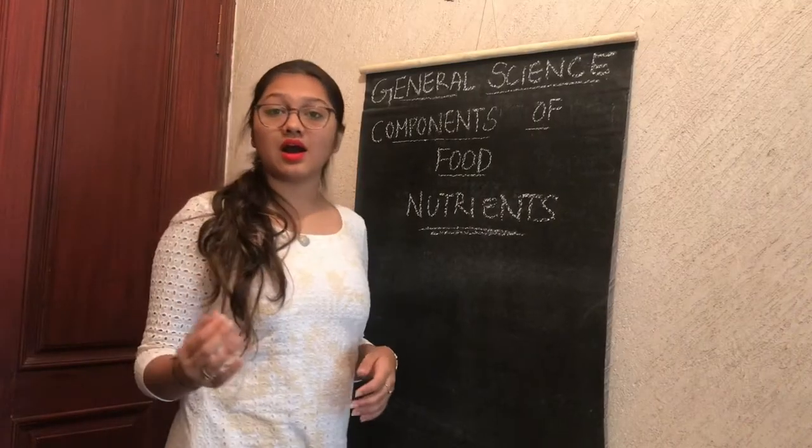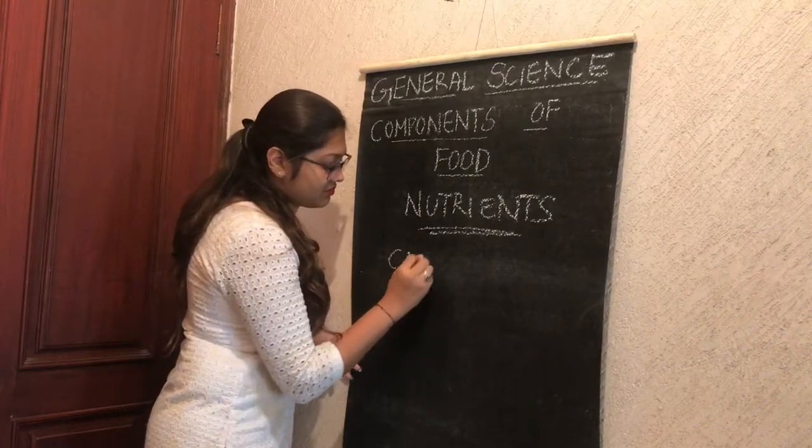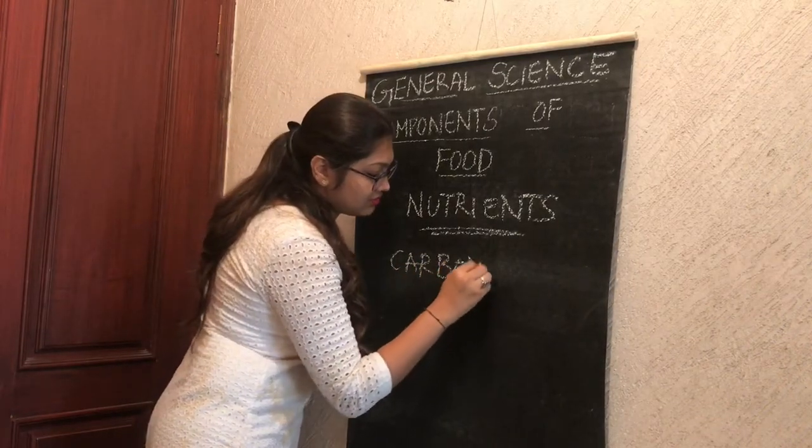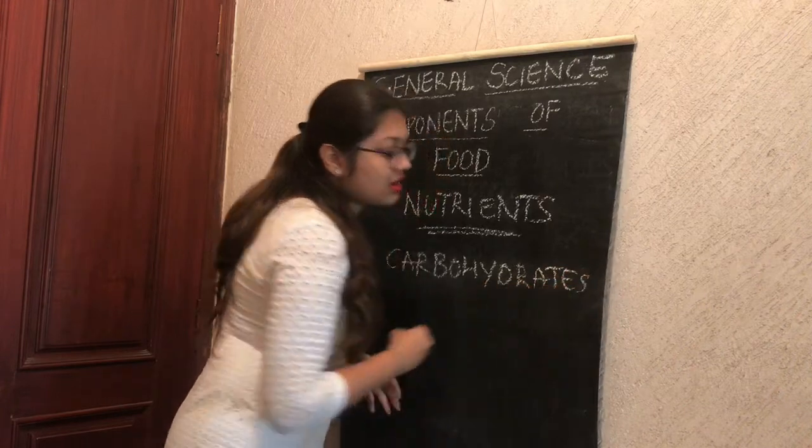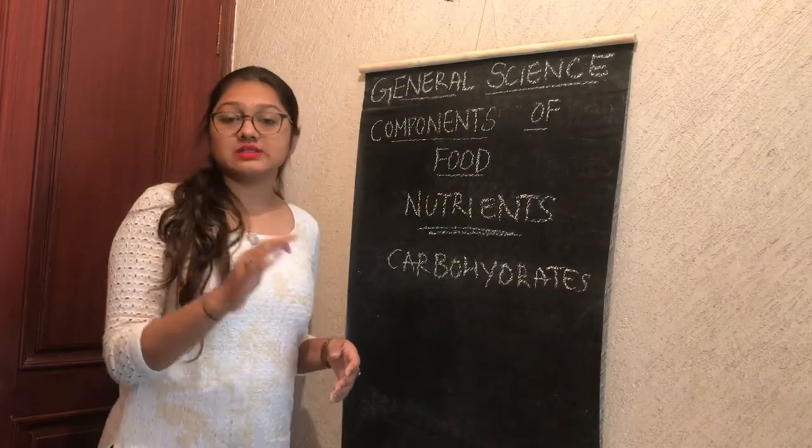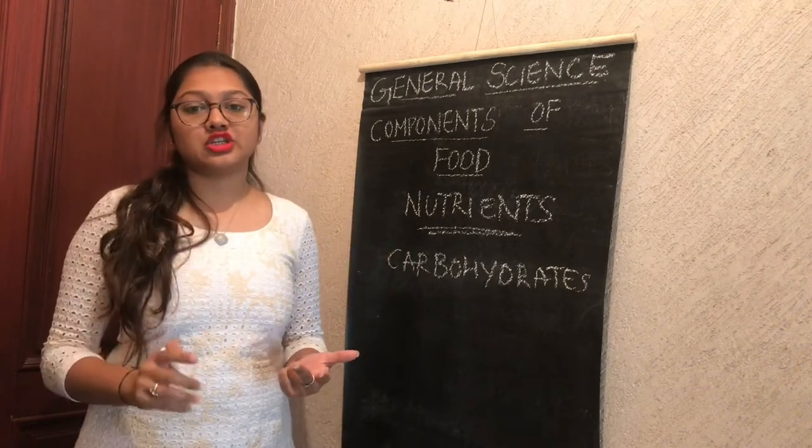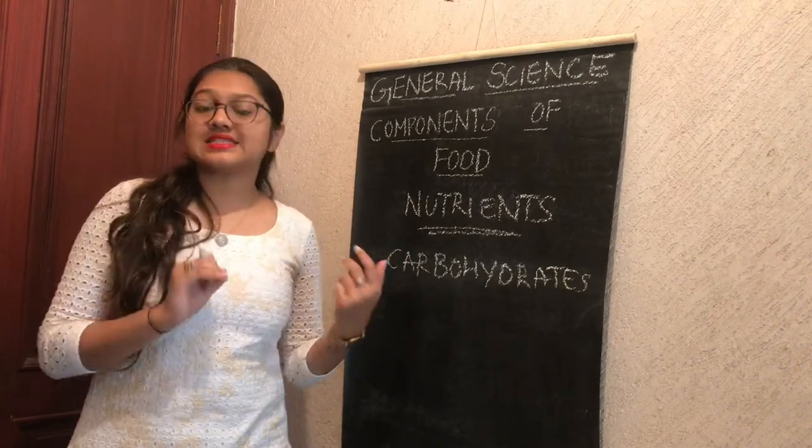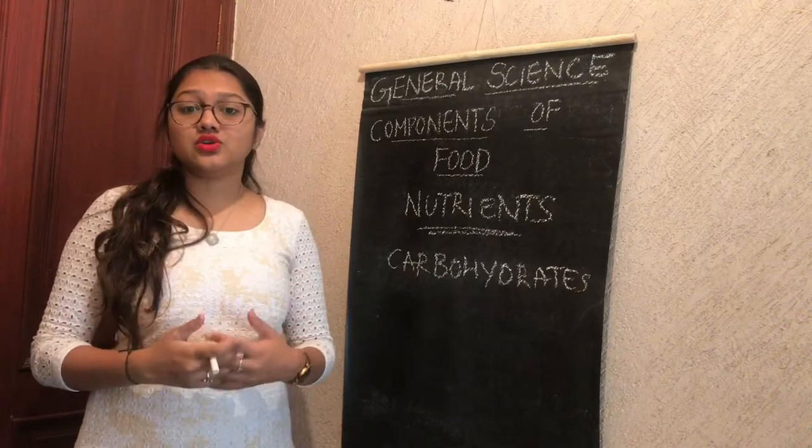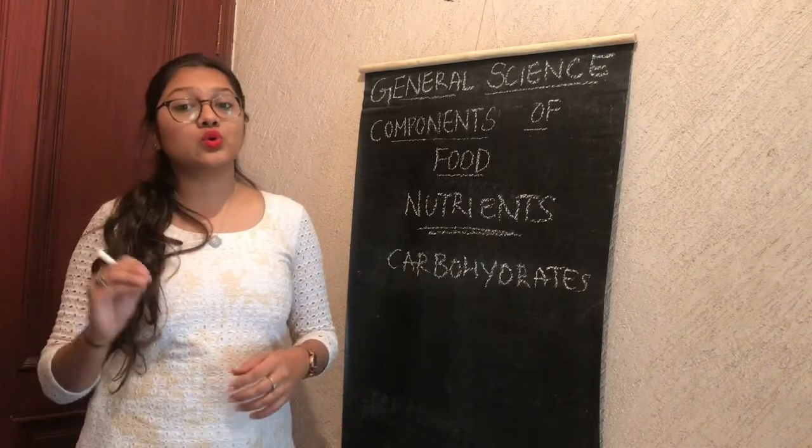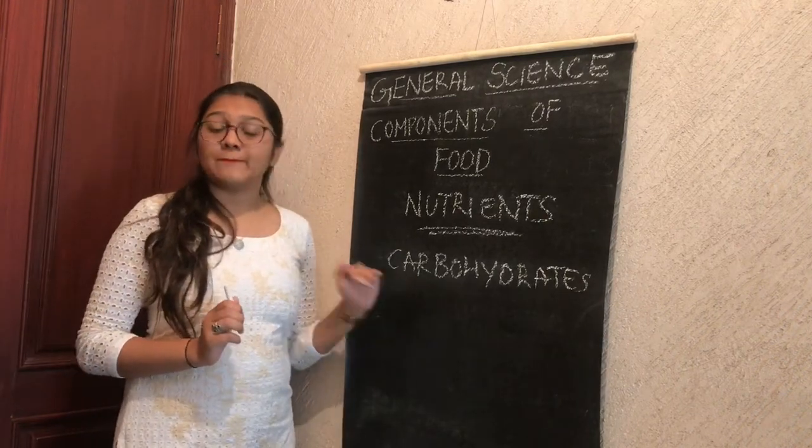Tell me, what are carbohydrates made up of? Carbohydrate is made up of carbon dioxide, hydrogen, and oxygen. It constitutes sugar and starch. It is rich in energy. Our body uses these to make glucose.